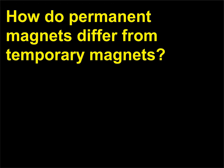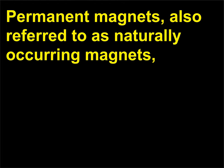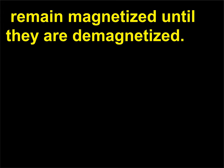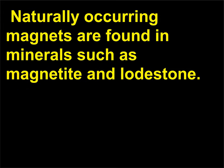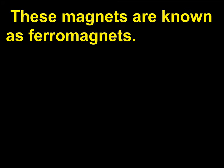How do permanent magnets differ from temporary magnets? Permanent magnets, also referred to as naturally occurring magnets, remain magnetized until they are demagnetized. Naturally occurring magnets are found in minerals such as magnetite and lodestone. These magnets are known as ferromagnets.